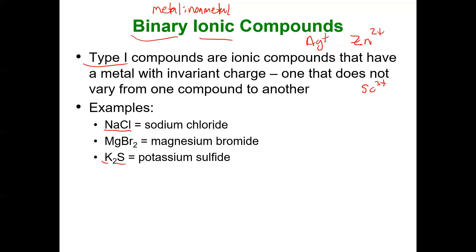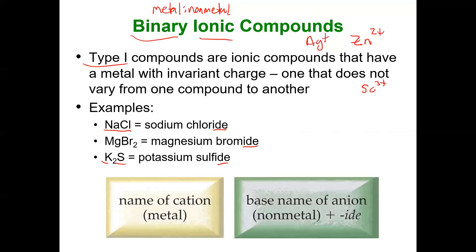Notice that all the nonmetals end in '-ide'. So it's not sodium chlorine. They cut off that '-n', keep the root of '-chlor', and add an '-ide suffix'. Same with bromine. They cut off the '-n', and put in '-ide'. Same with sulfur. To name binary ionic compounds, you write the full name of the metal cation, and then for the nonmetal anion, you take the root of the nonmetal and add the '-ide suffix'.